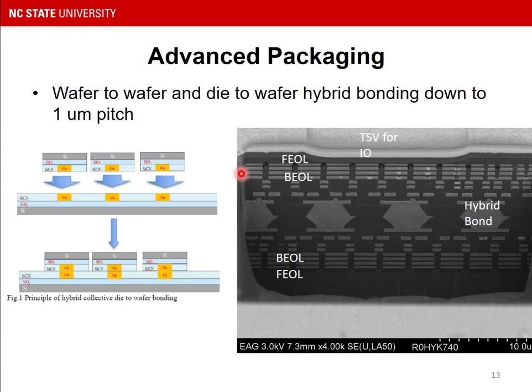The advanced packaging version of 3D — for example, what's called hybrid bonding — is also very powerful. Hybrid bonding is a copper-copper bonding of planar surfaces to create bonds between two wafers or a chip on a wafer, face-to-face connected to each other. Here's an SEM photo from one of our projects using hybrid bonding, showing two wafers stacked on top of each other, with the hybrid bonds giving a high-density connection between the face of one wafer and the face of the other.